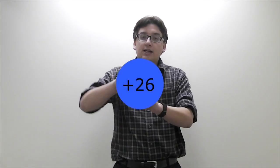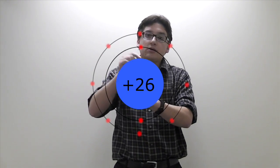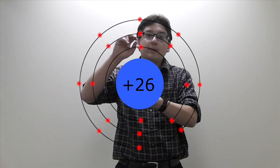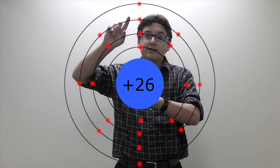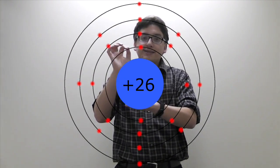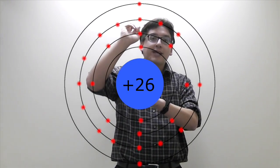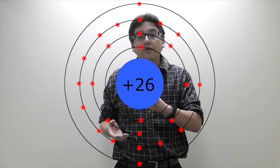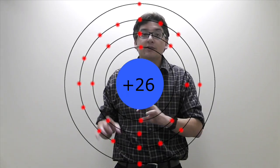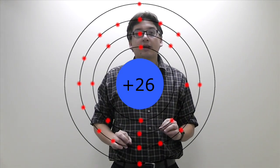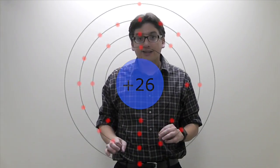Alright, so if I actually diagram what iron looks like, there's its nucleus, there's the 1s2, the 2s2 and 2p6, the 3s2 and 3p6, there's the 4s2, but then I'm adding more electrons to the d orbital in the 3 level, which means these two electrons in the outermost shell, those are its only valence electrons, which means all the transition metals have only two valence electrons.